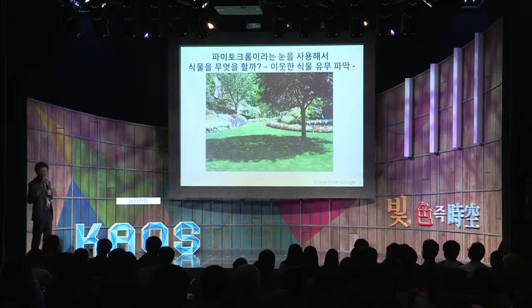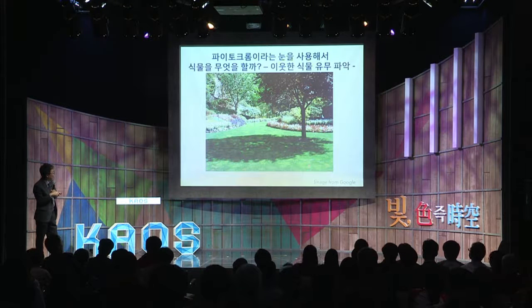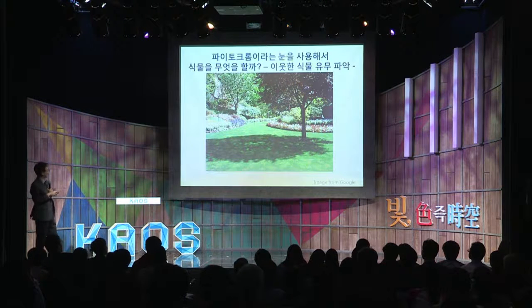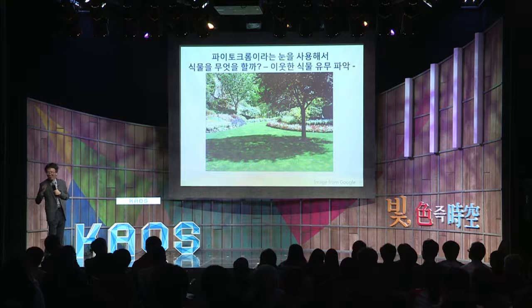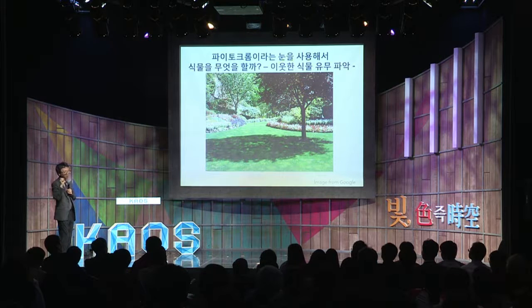그거는 이런 상태와 비슷해요. 여기 있는 잔디는 빛을 잘 받아요. 그런데 여기 있는 잔디는 옆에 커다란 나무가 있는 상태예요. 결국은 주변에 식물이 있다 하면 그 식물에 의해서 그늘이 만들어진다는 소리예요. 결국 식물이 내가 지금 그늘에 있다 없다를 알면, 옆에 식물이 있다 없다를 알 수 있어요. 그걸 어떻게 알까요? 다시 광합성으로 돌아가겠습니다.